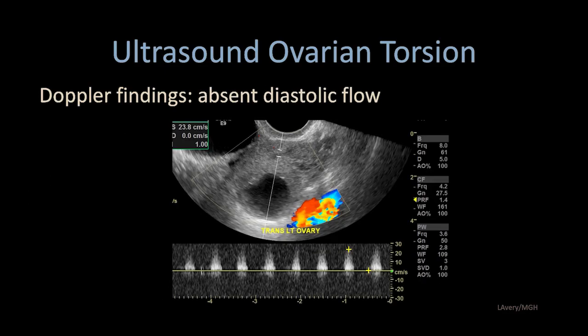Here we have absent diastolic flow — that's another possible finding with ovarian torsion. As the pressure increases, you may lose that low portion of the cardiac cycle. This is a high-resistant waveform.